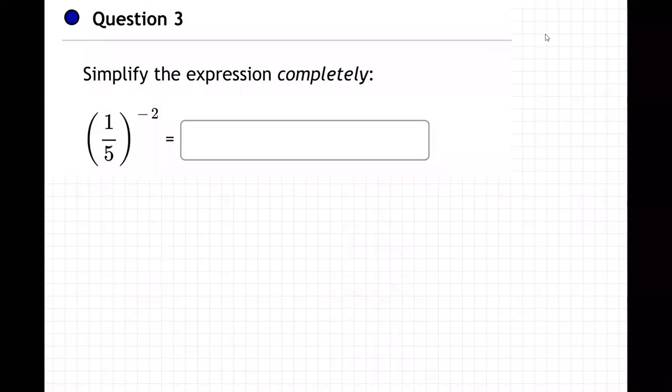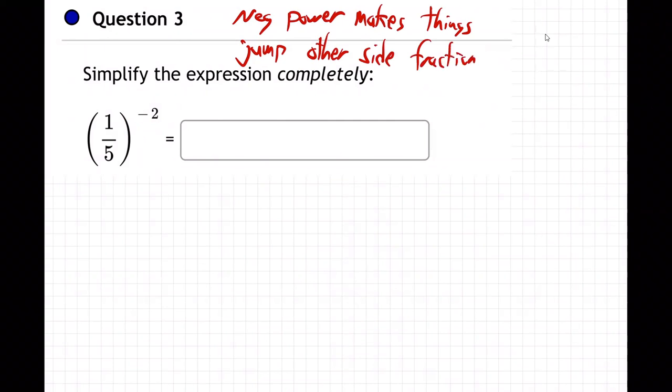Okay, so on this one we have a negative power, and remember what negative powers do. They make things jump, so a negative power makes things jump to the other side of the fraction.